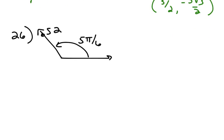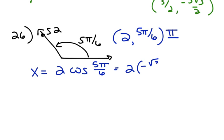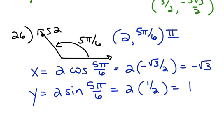For number 26, the polar coordinates are (2, 5pi/6). So x equals 2 cosine(5pi/6). Since 5pi/6 is in quadrant 2, cosine is negative — it's negative √3/2. So x equals negative √3. y equals 2 sine(5pi/6), and in quadrant 2, sine is positive, so it's 2 times 1/2, which is 1. The rectangular coordinates are (−√3, 1).